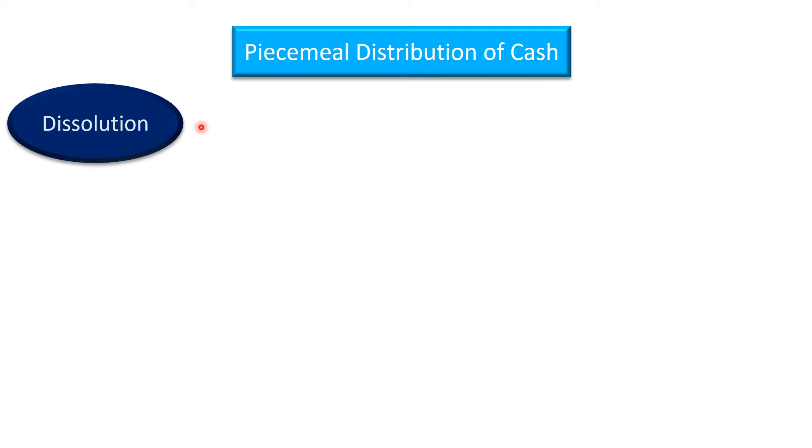Our SYBCOM semester three is related to partnership firms. Piecemeal distribution and dissolution are both about partnership firms. Dissolution is nothing but closing down the business of a partnership firm completely — that is called dissolution of a partnership firm. There are many reasons why a firm is dissolved. One common reason is that the firm is running into losses, and that is why partners decide to dissolve the firm, though this is not always the reason.